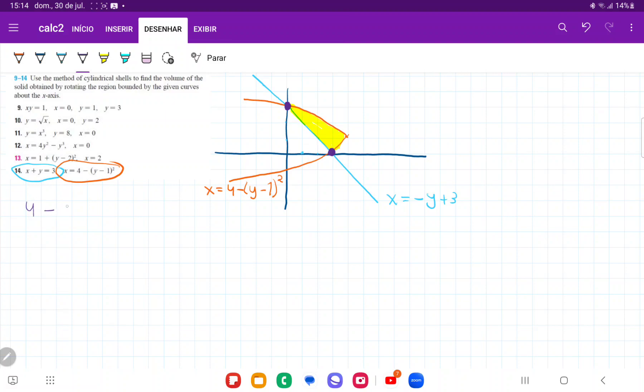So I have that 4 minus y minus 1 squared is equal to minus y plus 3. So I'm going to just expand the one on the left. So that's 4 minus y squared minus 2y plus 1 is equal to minus y plus 3.